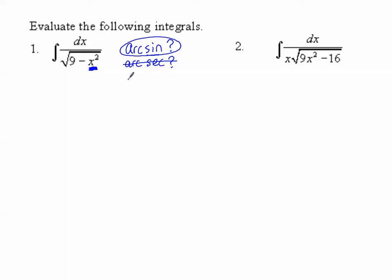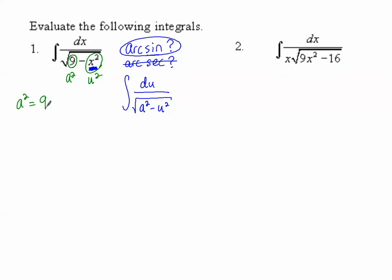I see the variable expression is second — constant minus variable — so it looks more like the arc sine form, not the arc secant. I want to make it look like the arc sine formula: the integral of du over the square root of a² minus u², a constant expression minus a variable expression, both perfect squares. I identify what is my a² and my u² here. The constant expression should be a² = 9, and the variable expression should be u² = x².